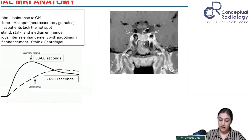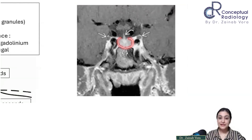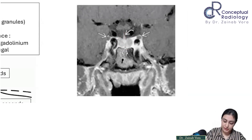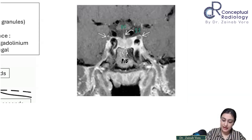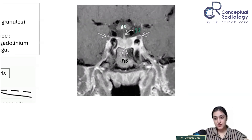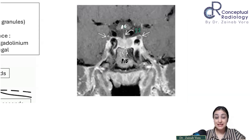Now anatomy on the corresponding coronal images. On these post-contrast images you can see the pituitary gland and the infundibular stalk. Also visible is the optic chiasma. On either side of the pituitary lie the paired cavernous sinuses. The anterior lobe is iso-intense to gray matter, and the posterior lobe is the T1 hotspot — importantly, about 20% of normal patients lack this hotspot, so its absence does not always indicate pathology.